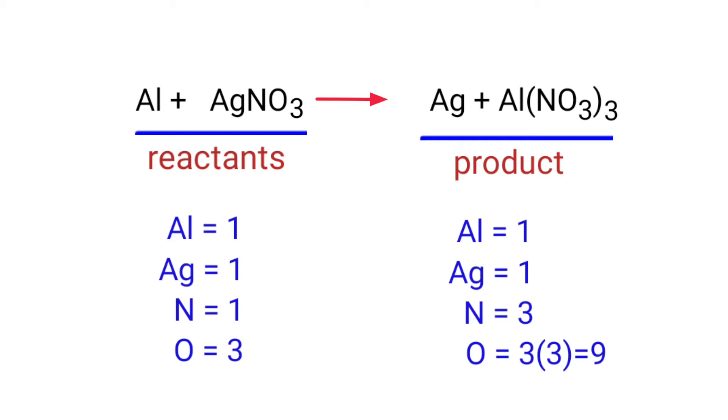In this equation, we need to balance the nitrogen and oxygen atoms. To do this, we need to put a coefficient of three in front of AgNO3.